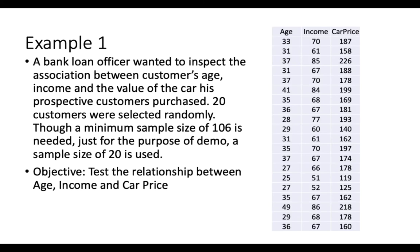Let's take a look at the example. It's the same data as before, but I've added another independent variable — age — so now we have age, income, and car price. The bank loan officer wanted to inspect the association between customers' age, income, and the value of the car purchased. Twenty customers were selected randomly. Though a minimum sample size of 106 is needed, a sample size of 20 is used just for the purpose of a demo. The objective is to test whether age and income influence car price, or whether age and income can be used to predict car price.